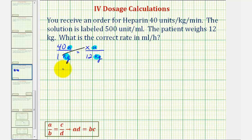So we'll have one times x, that's x, must equal 40 times 12. That would be 480, which means the patient needs 480 units per minute.